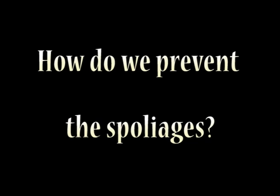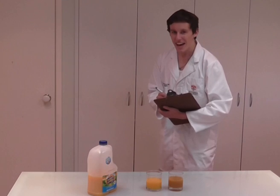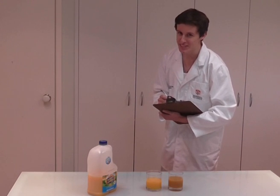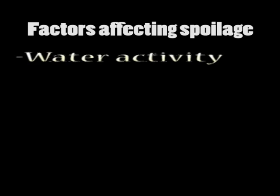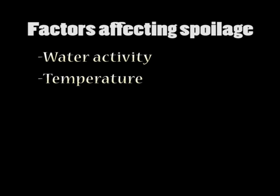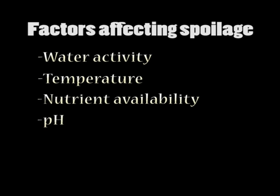But how do we prevent these spoilages? There are many factors that influence the rate of spoilage, such as water activity, temperature, nutrient availability, pH and oxygen. By controlling these factors, physical, chemical and microbial spoilage of food can be slowed and controlled to a greater extent.